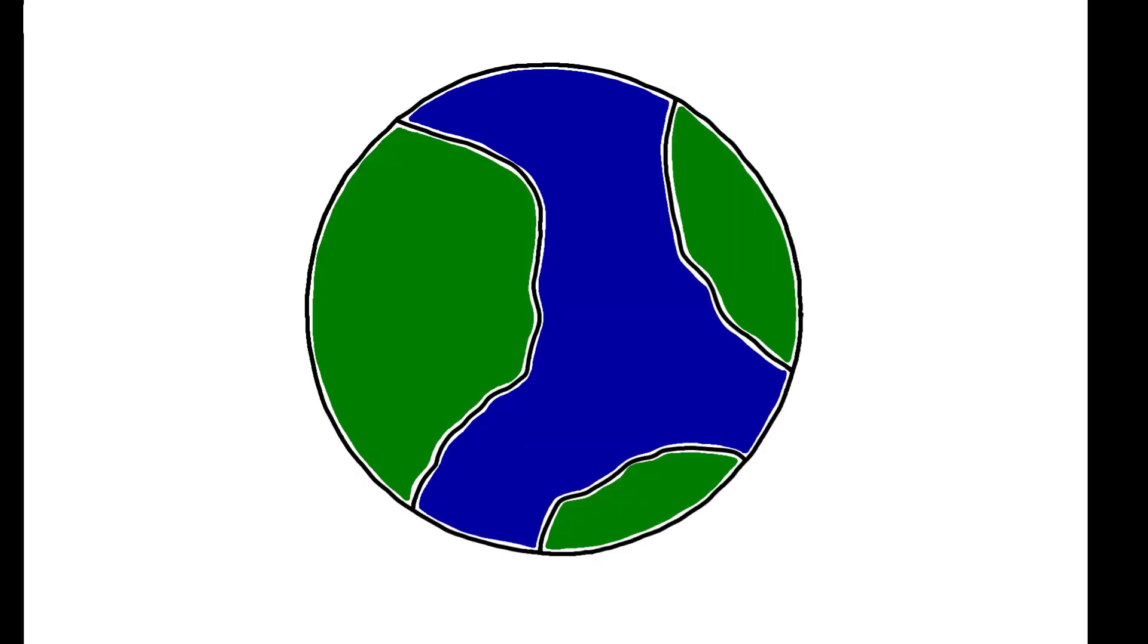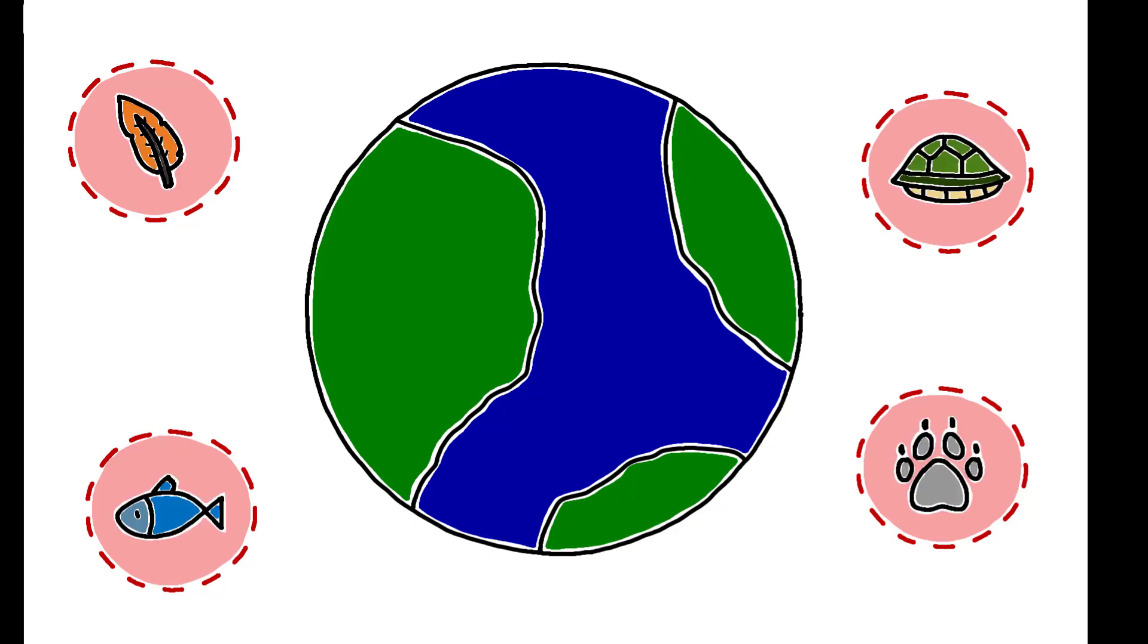We are currently undergoing the sixth mass extinction in the history of the planet, and the first induced by human activity. Since 1900, 477 vertebrate species have become globally extinct in the wild, and local extinctions, in which a species disappears from one part of the world, are even more common.